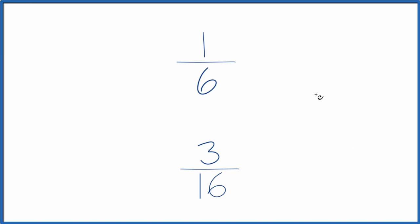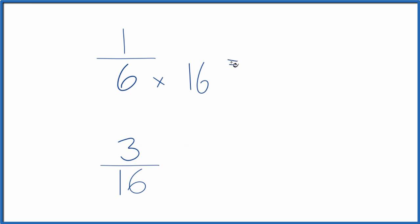You could find a number that 6 and 16 go into evenly, and I think 48 would work. But probably what I would do is just multiply 6 times 16, and when I do that I get 96. And down here I would multiply 16 by 6 and I would get 96, so now I have the same denominator. It's just a little quicker for me.